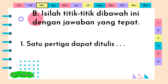Isilah titik-titik di bawah ini dengan jawaban yang tepat. Satu per tiga dapat ditulis titik-titik-titik. Jawabannya adalah: angka satu sebagai pembilang, kemudian garis horizontal, dan angka tiga sebagai penyebut.